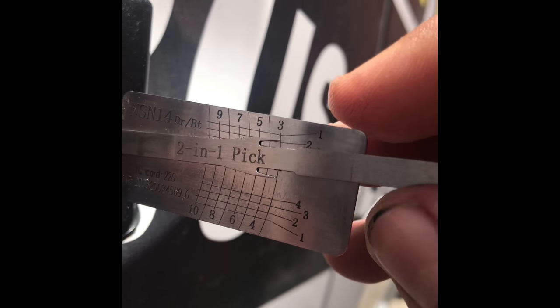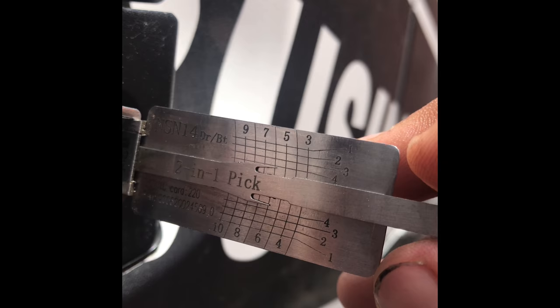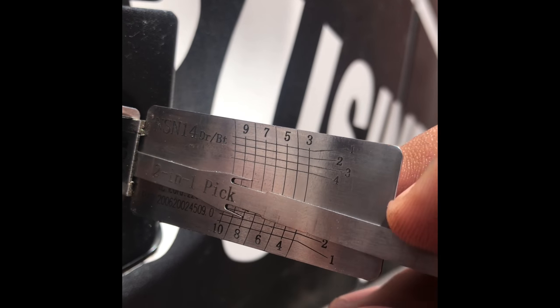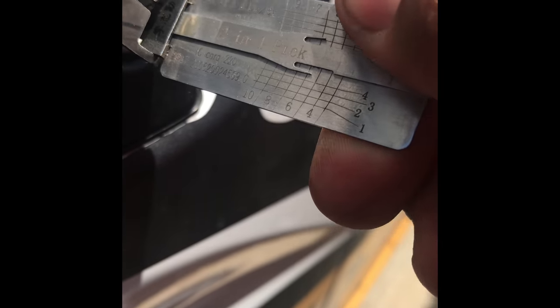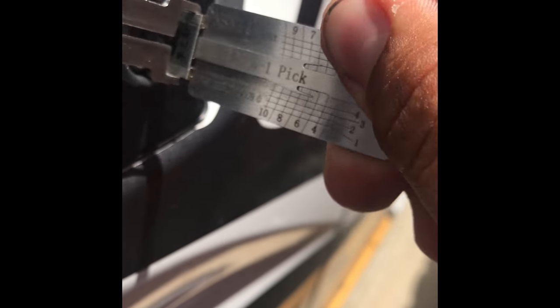Now we're going to go back to 3 is springy, 4 is springy, 5 is spring, 6, 7, 8 is solid. There you go. So now we have successfully picked the lock.